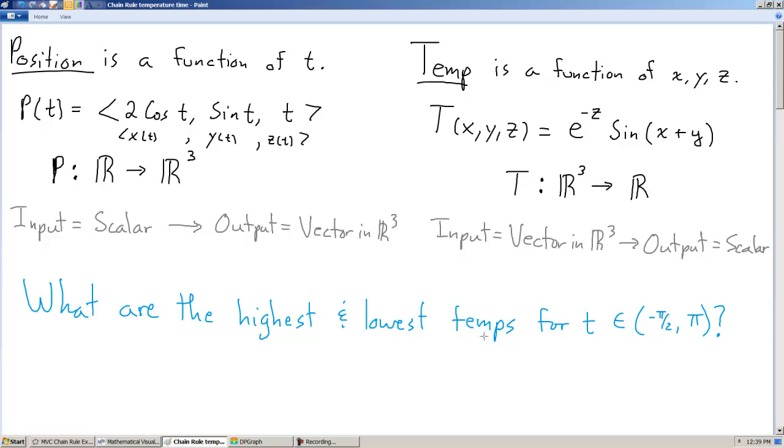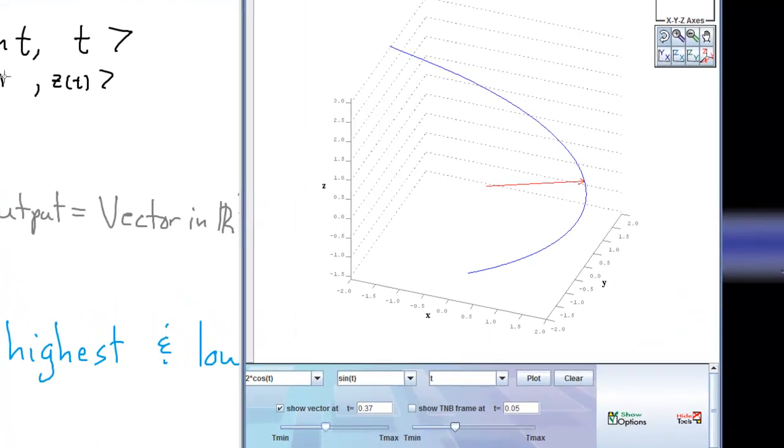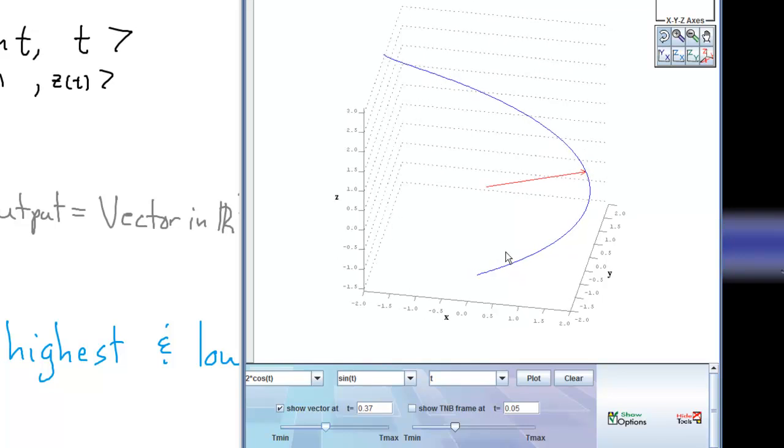Before we do that, let's try and visualize each of these functions. So the position function is, if you look at the x and y components, you've got 2 cosine t for the x part, sine t for the y part. That should tell you that we've got an ellipse. And the t for the z part means that it's some sort of helix in space.